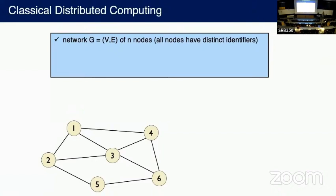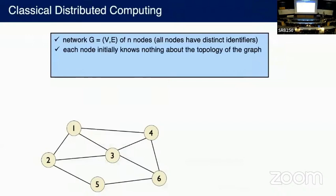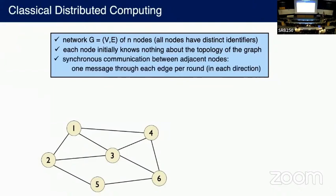For technical reasons, we assume that all nodes have distinct IDs. Each node initially knows nothing about the topology of the graph. Communication is synchronous, meaning it occurs round by round, and at each round, nodes can send one message to their neighbors.